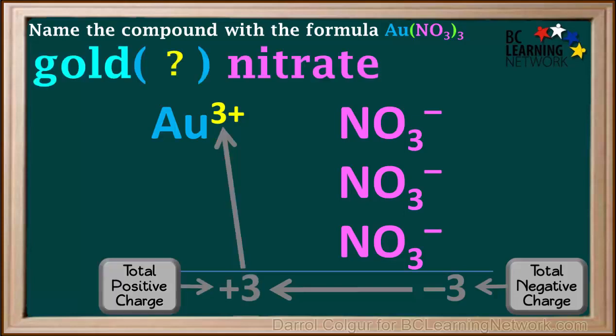The Roman numeral represents the charge on one gold ion, so the Roman numeral is 3. So the name of this compound is gold(III) nitrate.